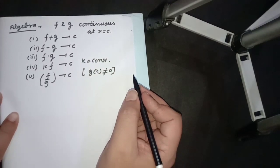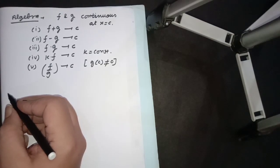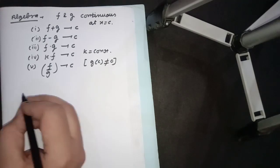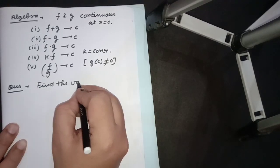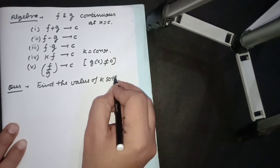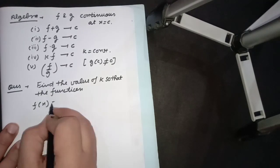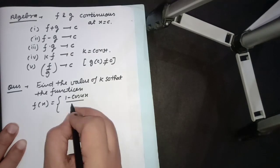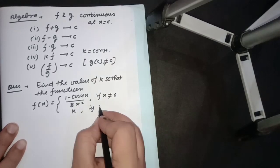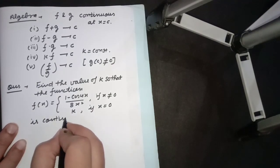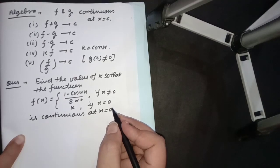The type of question that comes in exams is either to check continuity at a given point, or to evaluate some unknown constant. For example: find the value of k so that the function f(x) = (1 minus cos 4x) upon 8x squared, when x is not equal to zero, and k when x is equal to zero, is continuous at x = 0. This is a very good question that appeared in CBSE 2014.